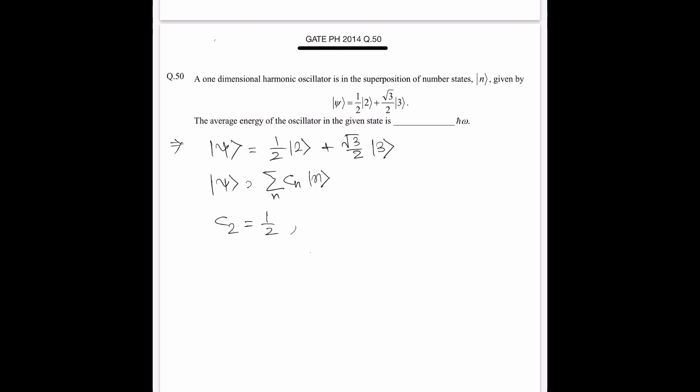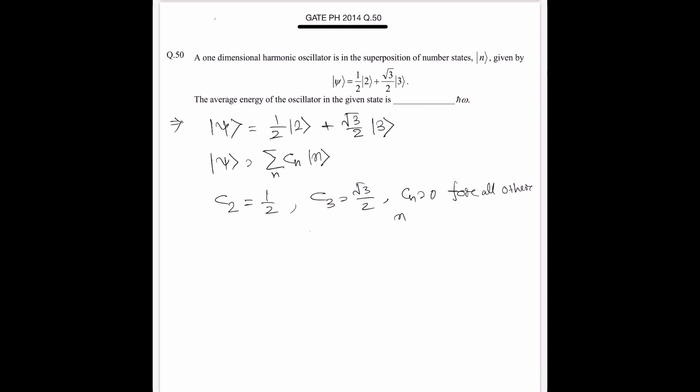c2 which is 1/2 and c3 is √3/2, and all the cn are 0 for all other n, except 2 and 3. Now for harmonic oscillator we know the eigen energies are...